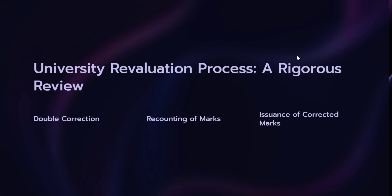Once the university receives your application, it initiates the revaluation process. Your answer sheet undergoes a rigorous revaluation by two independent evaluators. This double correction method ensures a high degree of accuracy and fairness. Each evaluator independently reviews the answer sheet, reassesses the answers, and recalculates the marks awarded. This method significantly reduces the chances of human error and biasness, as the involvement of two evaluators ensures that any discrepancies are identified and corrected.